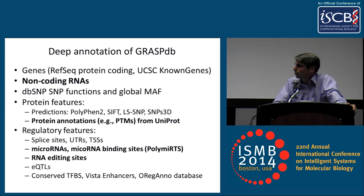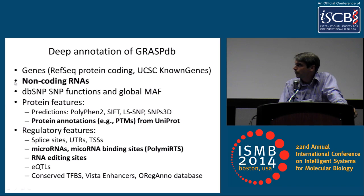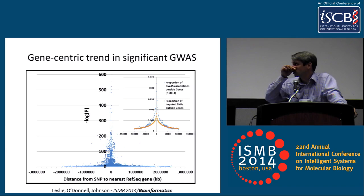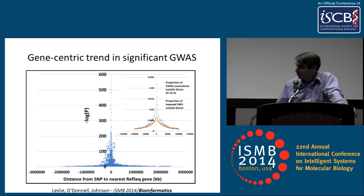One of the things we wanted to do is think about how we can deeply annotate and re-annotate GWAS results in a way that a lot of the researchers probably aren't thinking about. To highlight a few things: non-coding RNAs, post-translational modifications, microRNAs and microRNA binding sites, as well as RNA editing sites, are things that generally have not been incorporated into annotation pipelines. We can revisit the hypothesis that associations are gene-centric. This is showing the distance for a genetic marker to its nearest gene, either in the 5' or 3' direction, and the significance of the result for any trait.